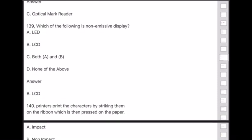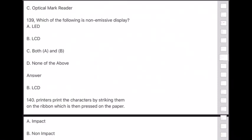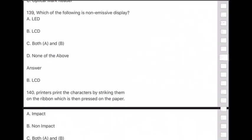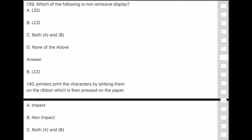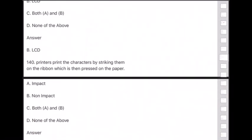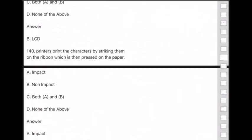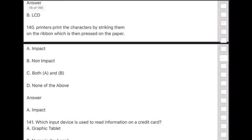Question 140: Printers that print characters by striking them on a ribbon which is then pressed on the paper are called — answer is option A — impact printers.